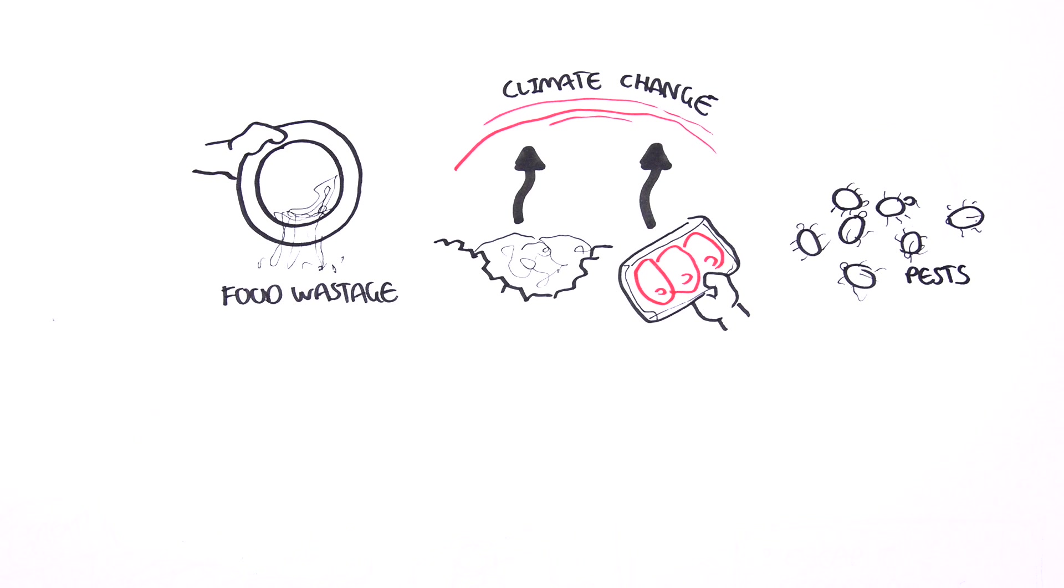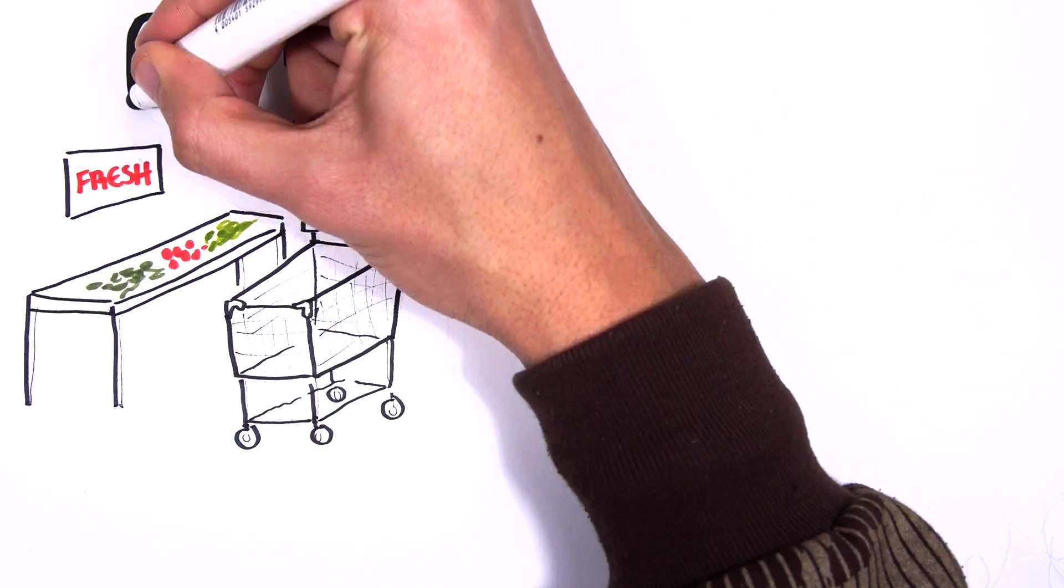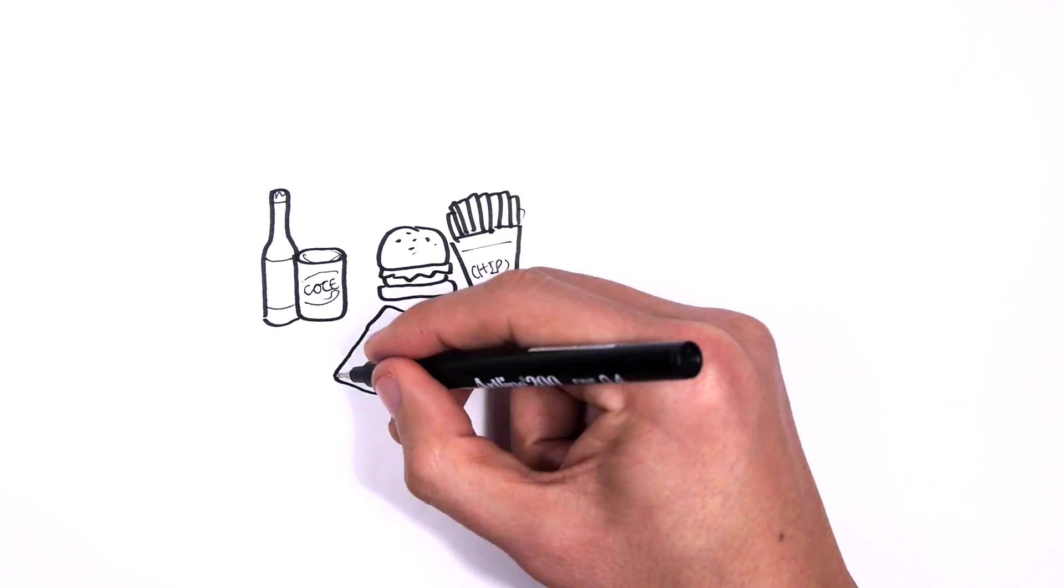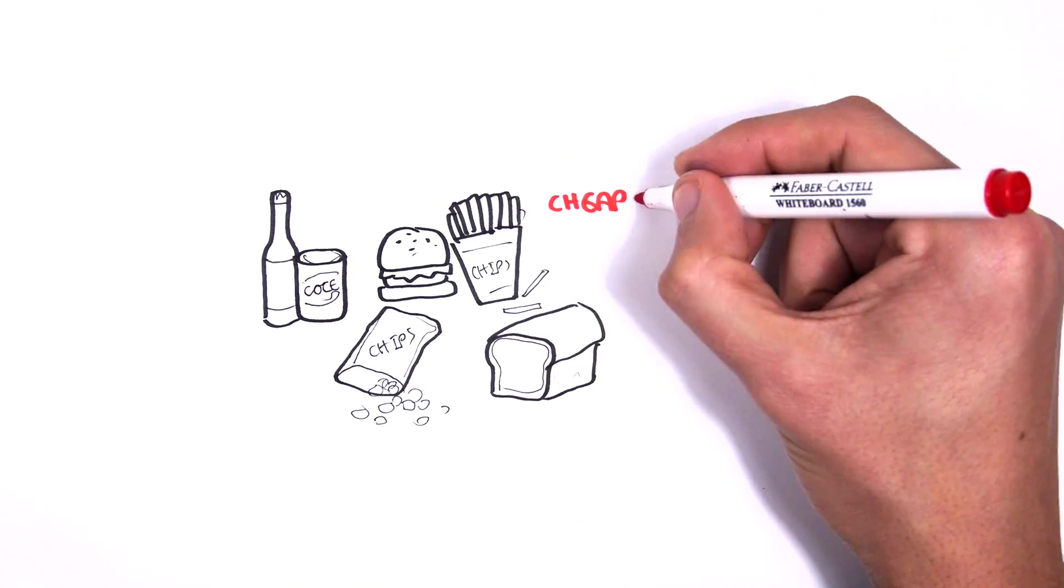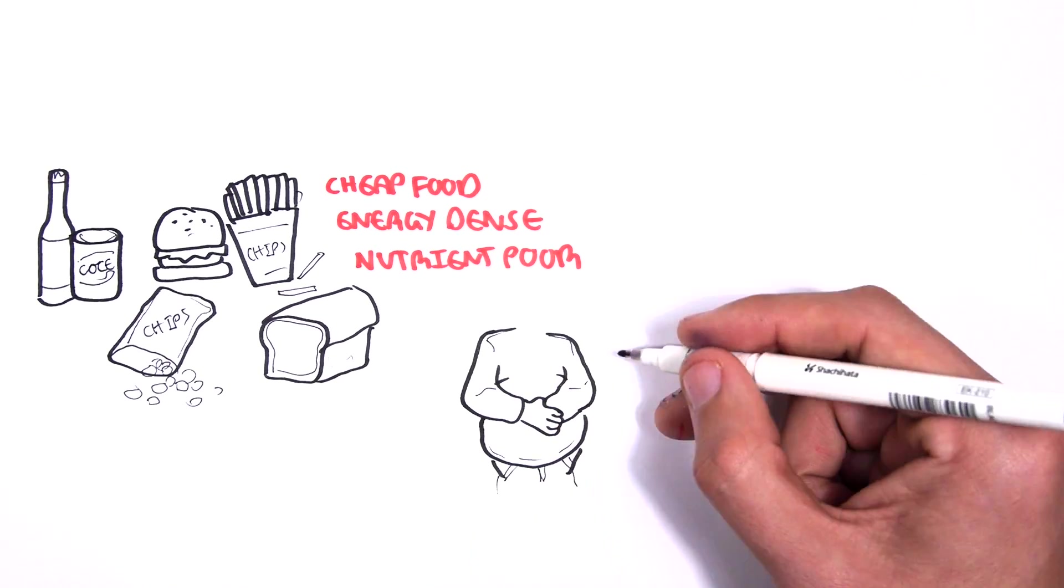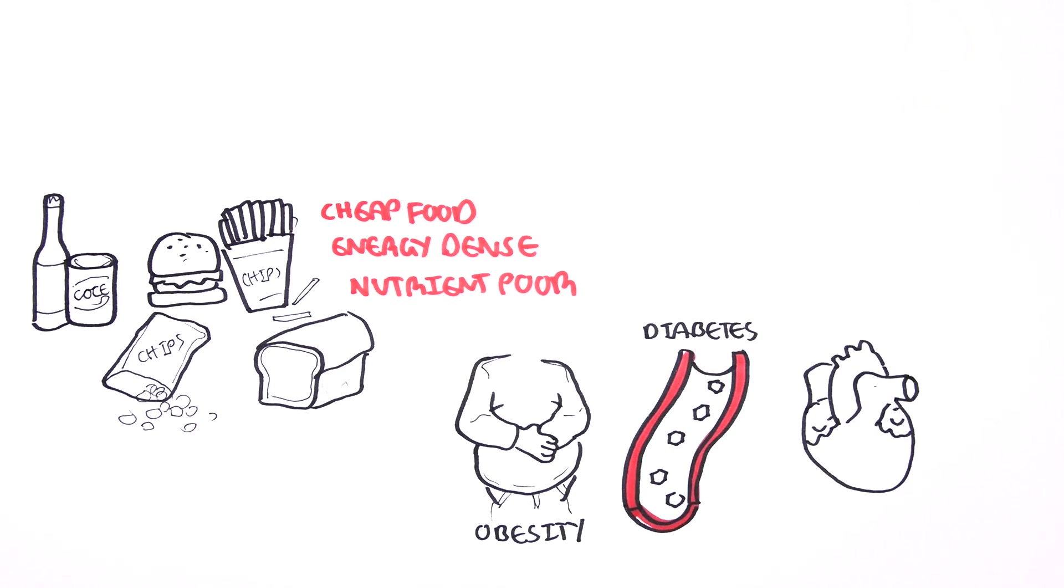The rising cost of healthy and fresh foods due to climate change will affect poor people the most. On the other hand, large multinational food organizations make huge profits selling cheap, energy-dense, nutrition-poor fast foods, which contributes to obesity, diabetes, and heart disease we see today.